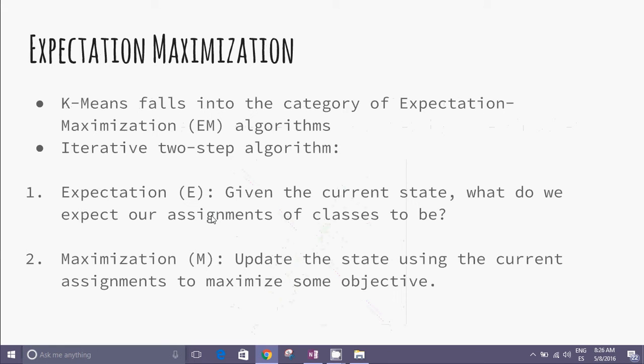Expectation maximization: The search for K-means falls in the category of expectation maximization algorithms. It consists of an iterative two-step process.